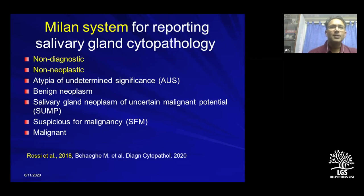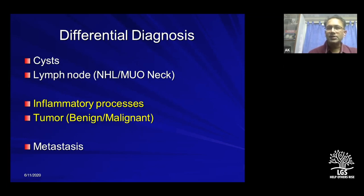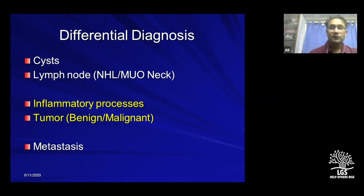Differential diagnosis is broad. It includes cysts — pre-auricular or normal, or HIV-related cysts. The parotid gland contains many intraparotid lymph nodes that can be enlarged, involved in malignant processes, lymphoma, or represent squamous cell carcinoma metastasis. One must also consider inflammatory conditions, metastatic disease to the parotid, and primary salivary gland tumors. I will present a couple of cases to drive these points home.